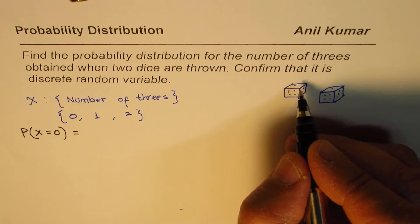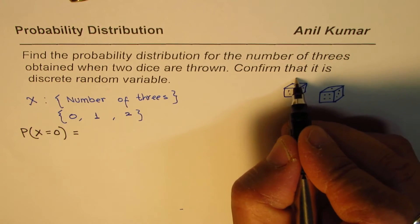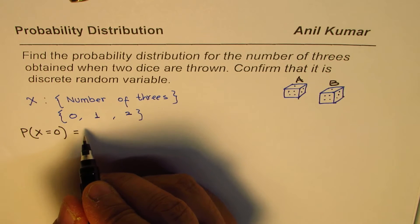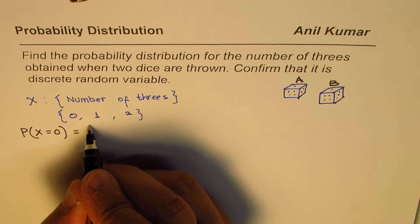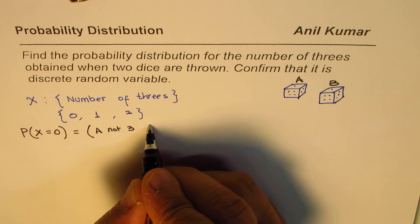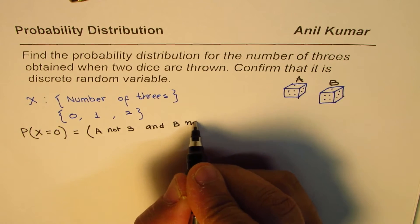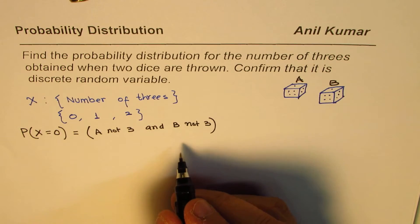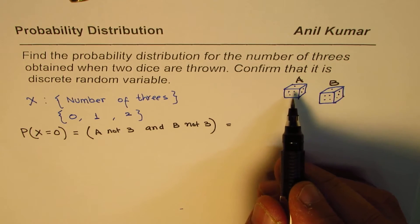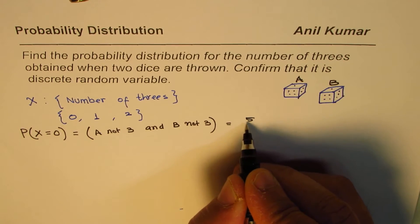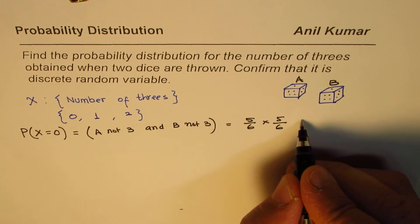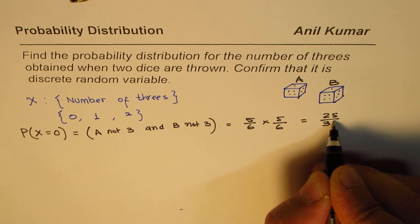Let's call the two dice A and B. For P(X = 0), we need A not three and B not three. Since both are independent events, A not three means any of five numbers out of six, so the probability is 5/6. Similarly, B not three is 5/6. That gives us 5/6 × 5/6 = 25/36.